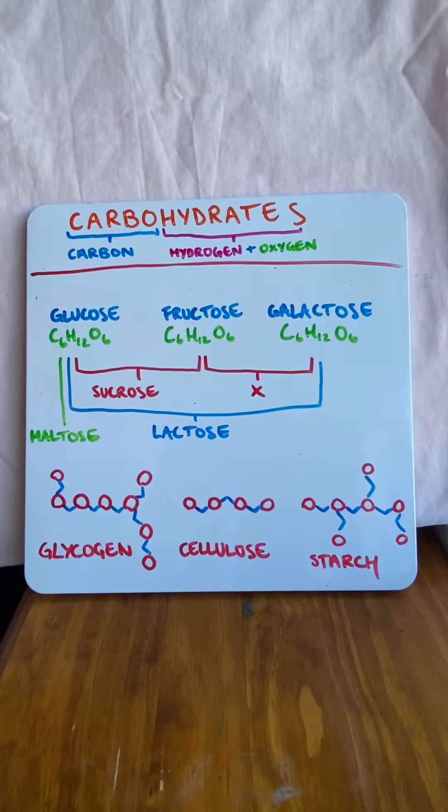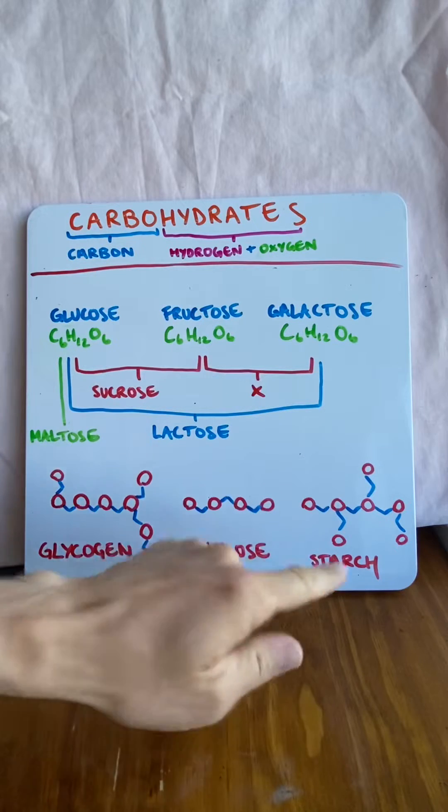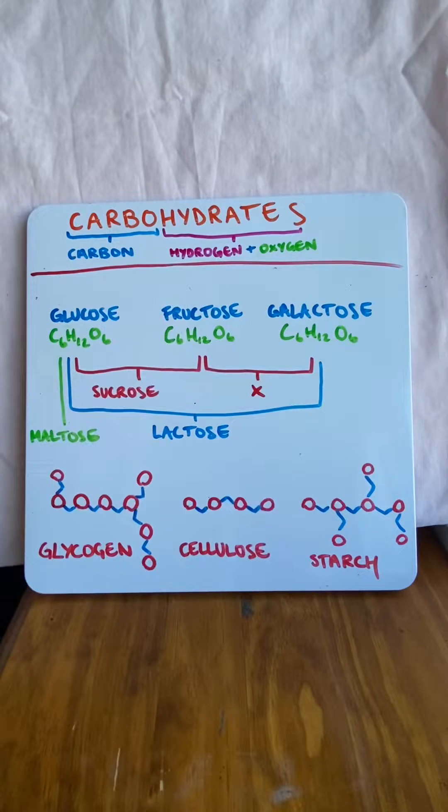Now I'm going to talk to you about monosaccharides, which are the simplest sugars, disaccharides, which are two sugars snapped together, and polysaccharides, which are many sugars snapped together. Mainly the way that sugar is stored.